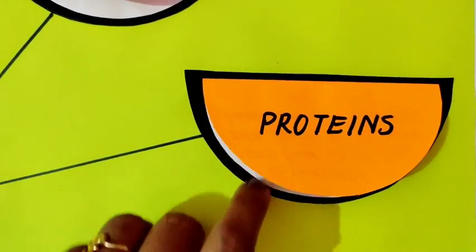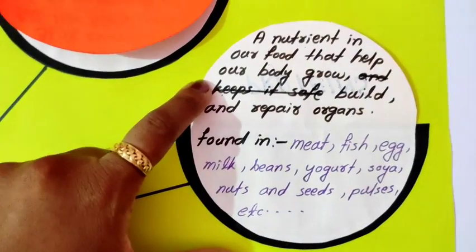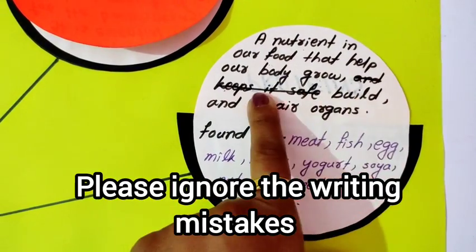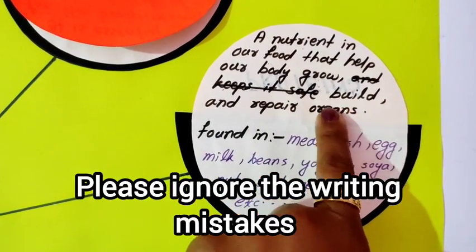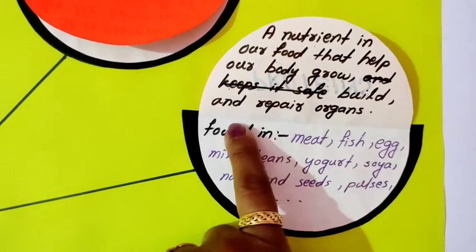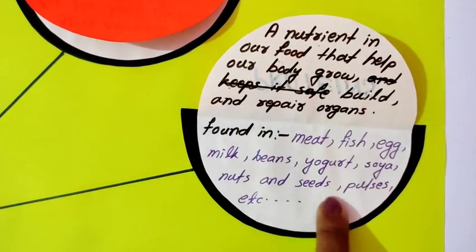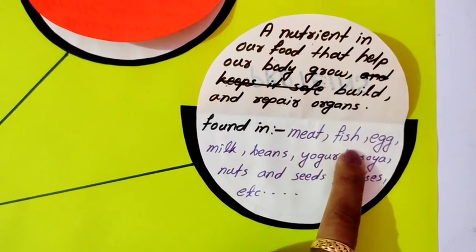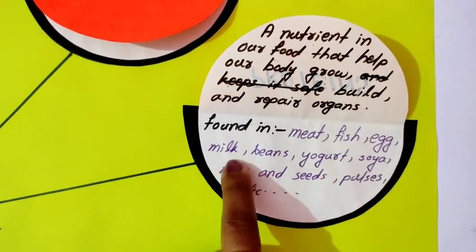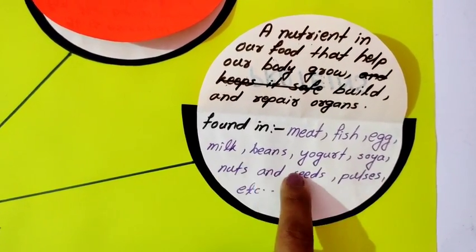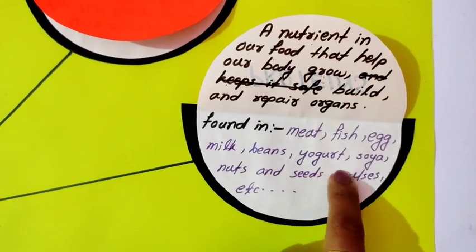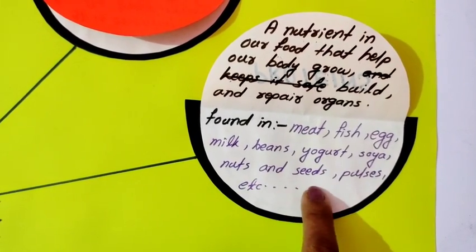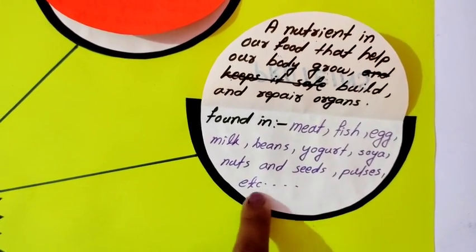Then proteins. This is a nutrient in our food that helps our body grow, build, and repair organs. Found in meat, fish, egg, milk, beans, yogurt, soya, nuts and seeds, pulses, etc.